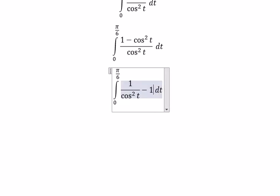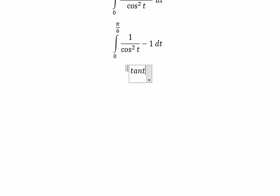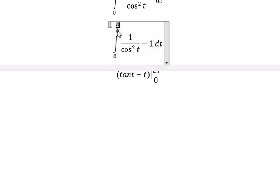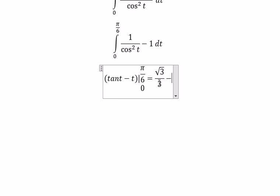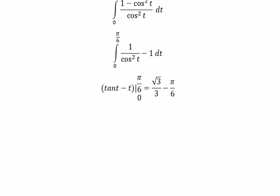This one we got about 1 over cos²(t) minus 1. And now we can get the final answer. The integral of 1 over cos²(t) we got about tan(t), and the 1 is about t. So we put the bounds in here. So you got about the square root of 3 over 3 minus π/6. And thank you for watching.